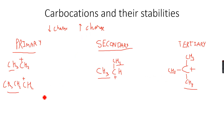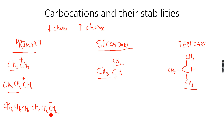This is a primary carbocation because the carbocation carbon is attached directly to only one carbon atom. The donating of electrons from this entire alkyl group towards the CH2+ is mostly significant from this carbon atom which is directly attached to it — it's not that significant from the other carbons further away.